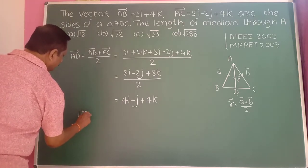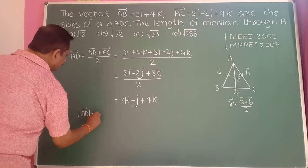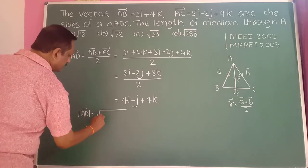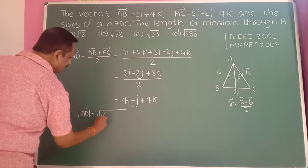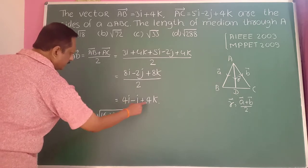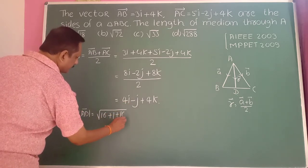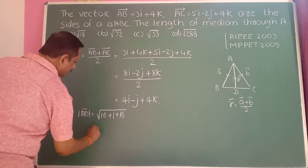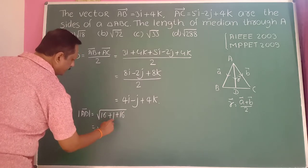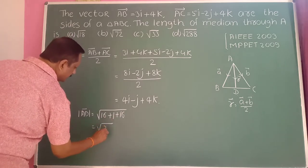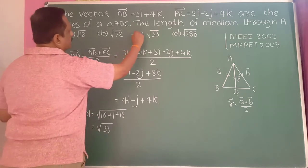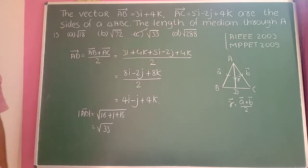We want the length: modulus of vector AD equals root of 4 squared plus 1 squared plus 4 squared, which is root of 16 plus 1 plus 16, equals root of 33. So the length of the median through vertex A is square root of 33.